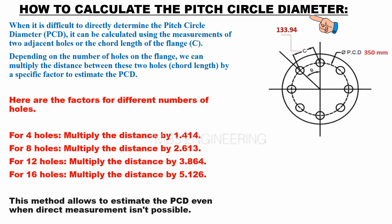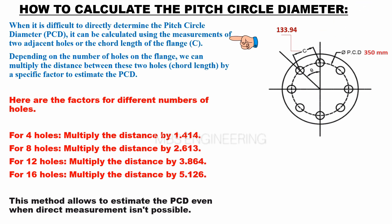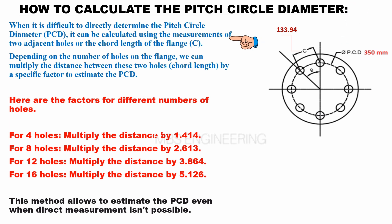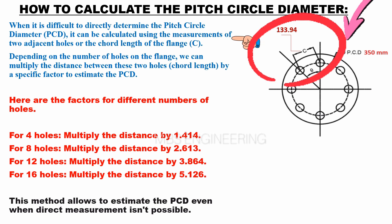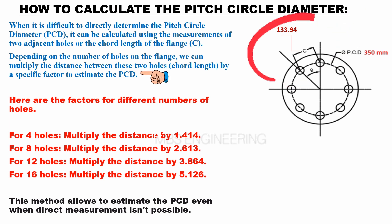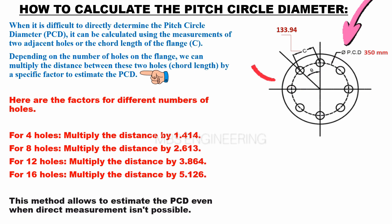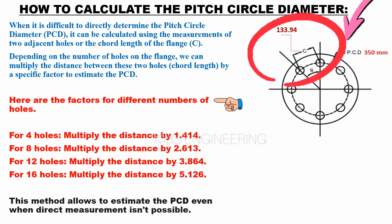The below method allows us to estimate the PCD even when direct measurement isn't possible. When it is difficult to directly determine the pitch circle diameter, it can be calculated using the measurements of two adjacent holes or the chord length of the flange C. Depending on the number of holes on the flange, we can multiply the distance between these two holes — the chord length — by a specific factor to estimate the PCD.